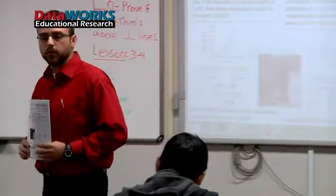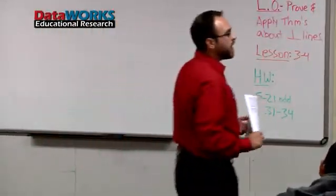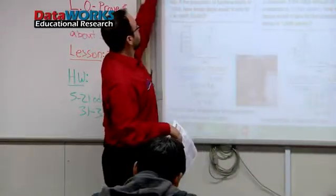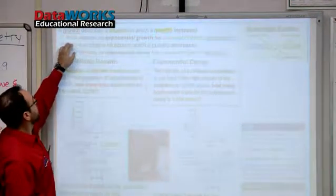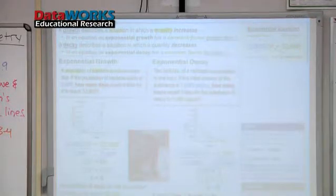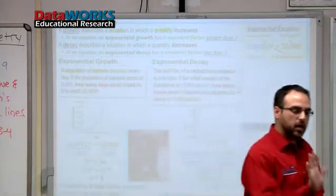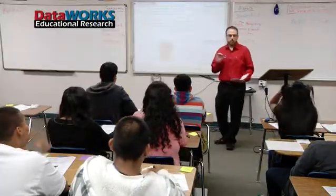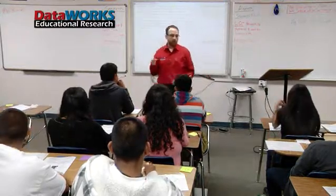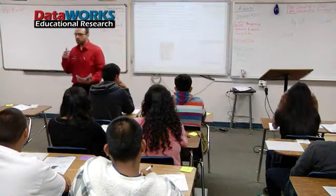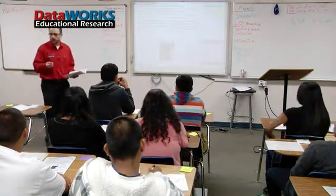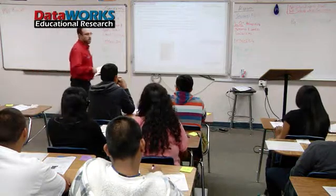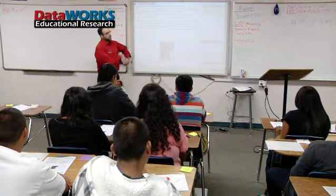Laura said something very important — she said that exponential growth was faster because it was multiplying over and over again, and we have a word for that: the constant factor. So let's go ahead and read: in an equation, an exponential growth has a constant factor greater than 1. The constant factor is how we are increasing our amount exponentially. Have you guys heard the word factor before? You should have heard it when going over multiplication, right? The factors 5 and 6 make 30. Factor means we're talking about multiplying over and over again. So we found that we were multiplying by 2 — Laura caught it.